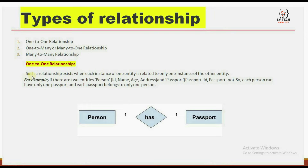One-to-one relationship: such a relationship exists where each instance of one entity is related to only one instance of the other entity. For example, if there are two entities — person and passport — each entity has attributes. Person has person ID, name, age, and address. Passport has passport ID and passport number. Each person can have only one passport, and each passport belongs to only one person. No one can have two passports, and no passport belongs to two persons.